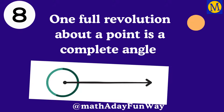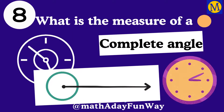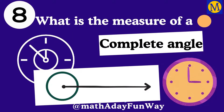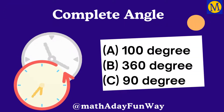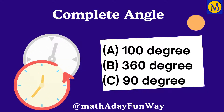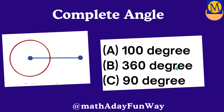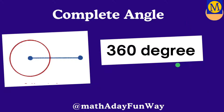One full revolution about a point is a complete angle. So, what is the measure of a complete angle? The right answer is 360 degrees.